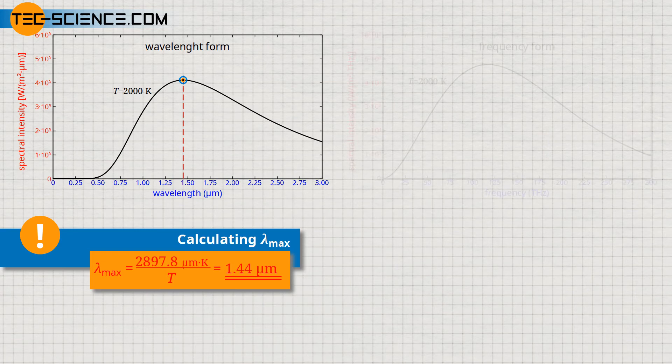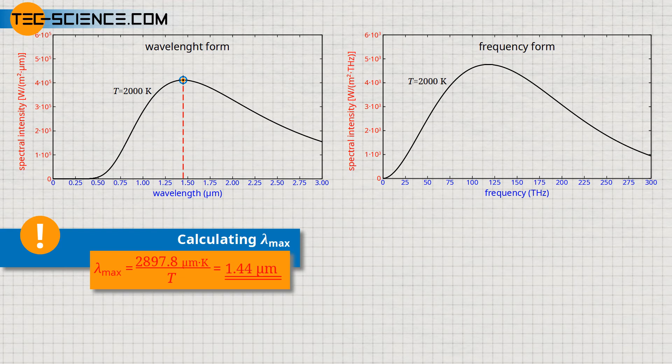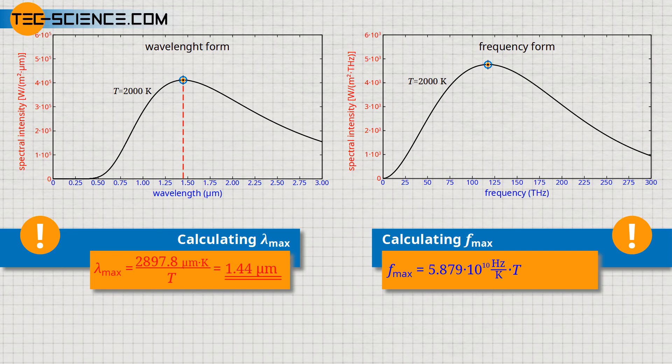Now we consider the same radiation but in the frequency spectrum. The diagram shows the frequency form of Planck's law. We want to determine the frequency f_max at which the spectral intensity has its maximum. Using the formula for the calculation of f_max, we obtain a frequency f_max of 118 terahertz.